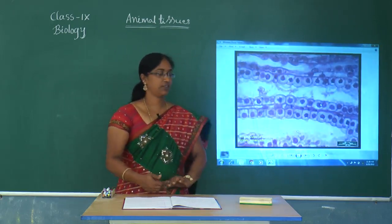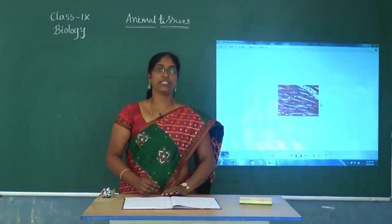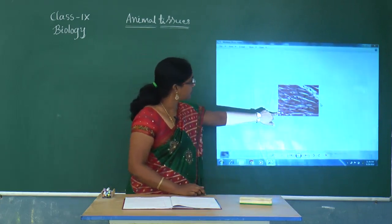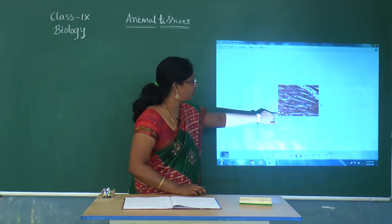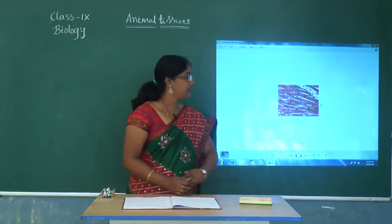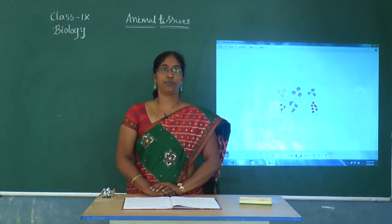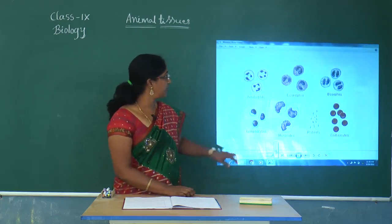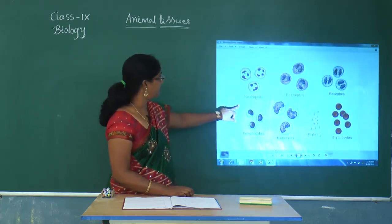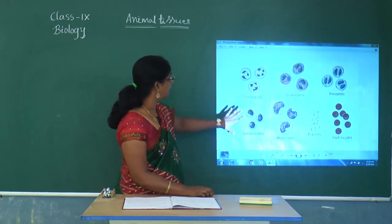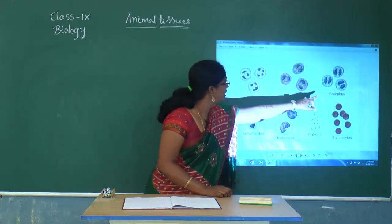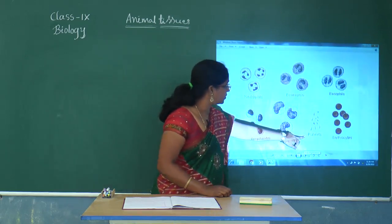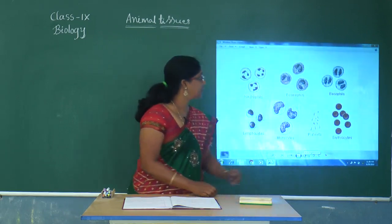We can do the same activity to observe muscle also. Instead of skin, we use muscle, and we can find muscle cell structures from the chicken. We can observe blood also — prick with a sterilized syringe, put a drop of blood on a slide, and observe under a microscope. We find different kinds of cells like neutrophils, eosinophils, basophils, lymphocytes, monocytes, platelets, and erythrocytes — erythrocytes meaning red blood cells.